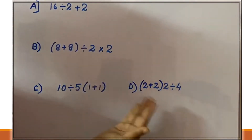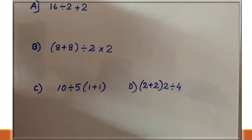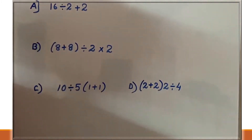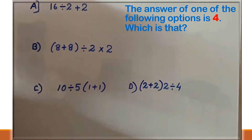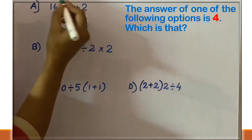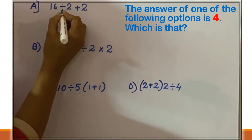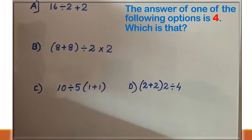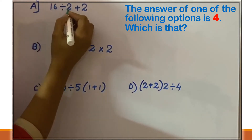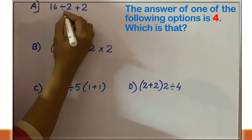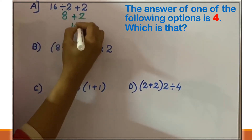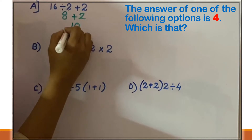There are 4 expressions and which expression gives the result 4. Let's check that. First, option A. Here, division and addition are there. First, we have to do division: 16 divided by 2, answer is 8. Then the addition. So, option A result is 10.